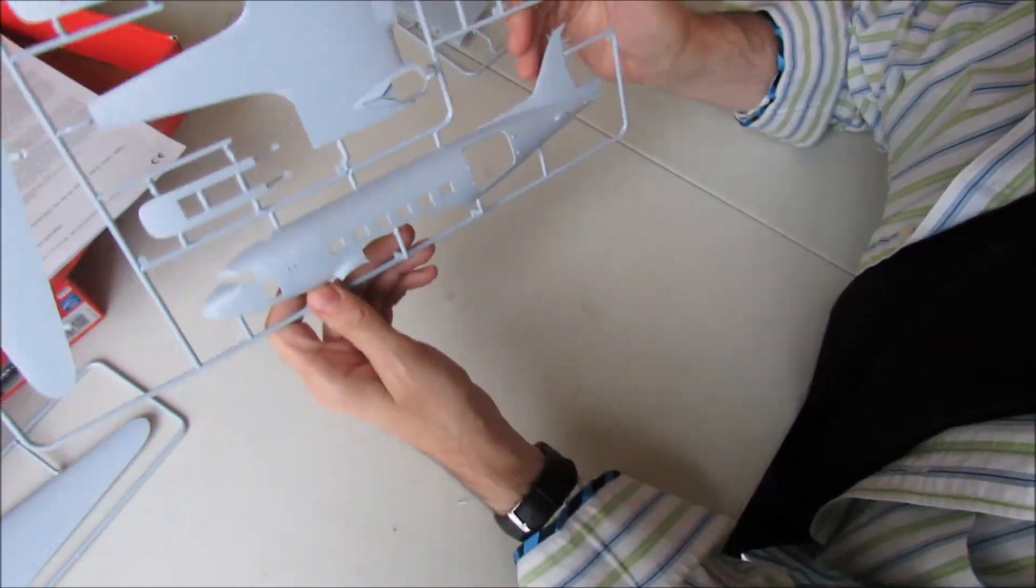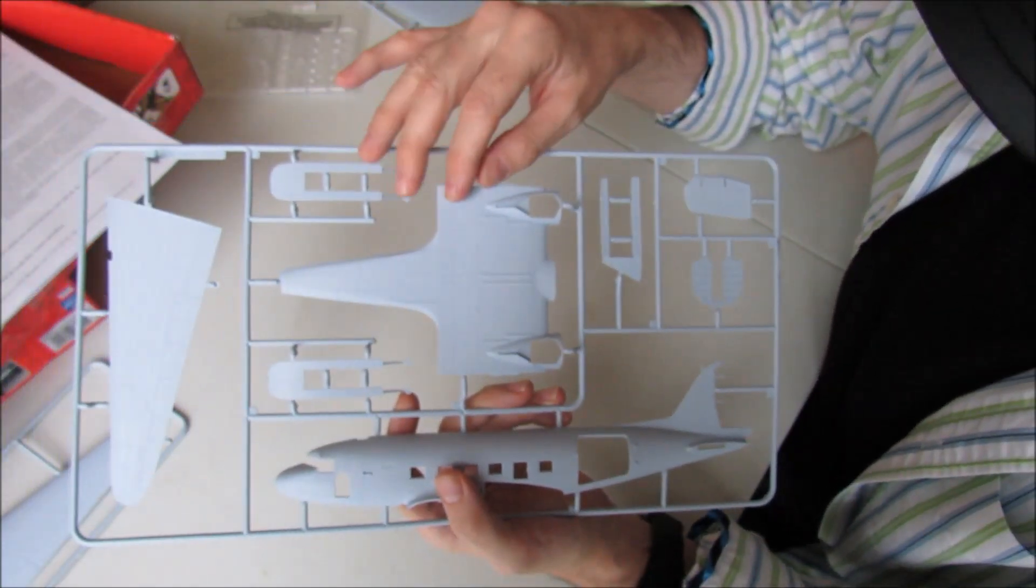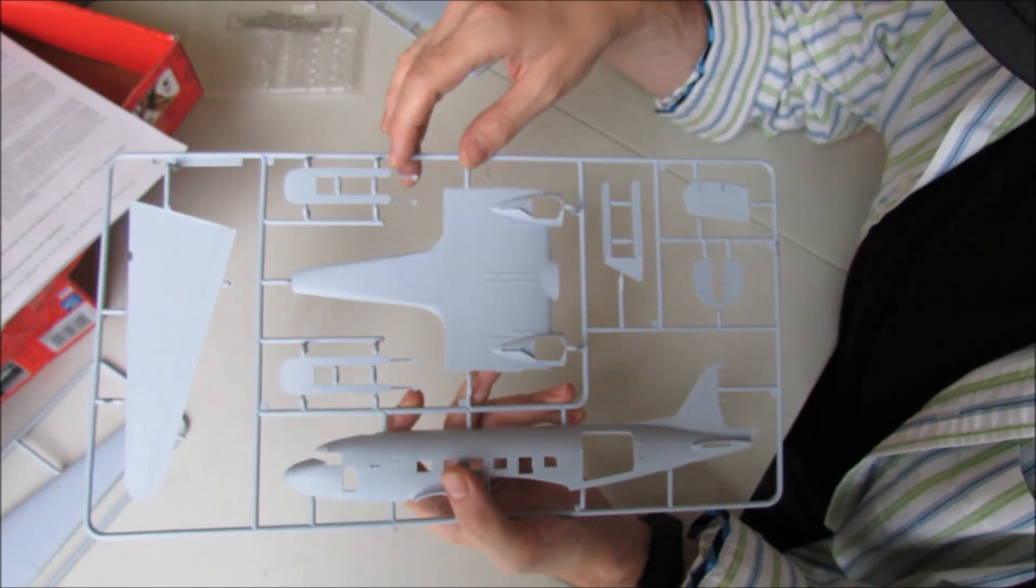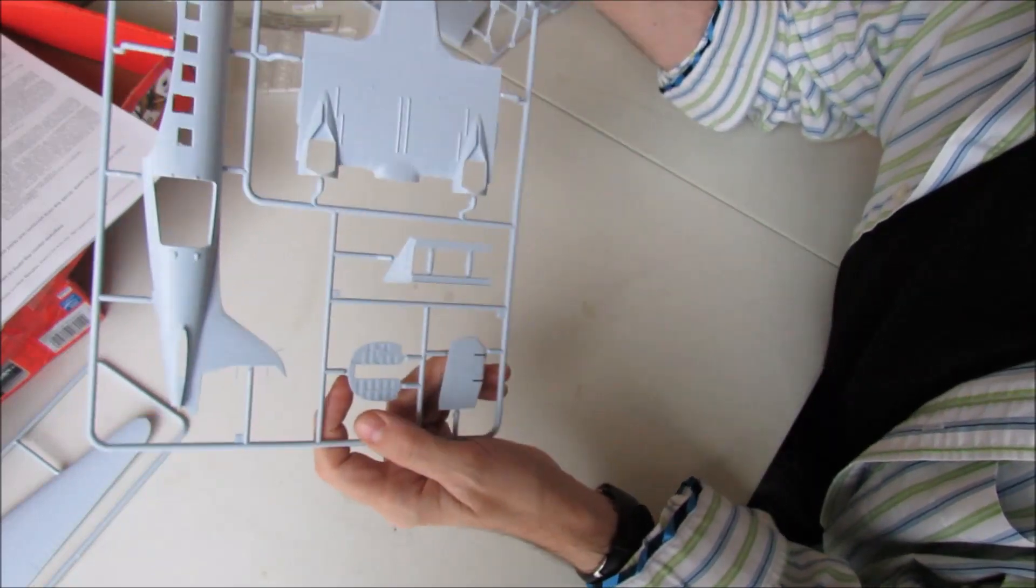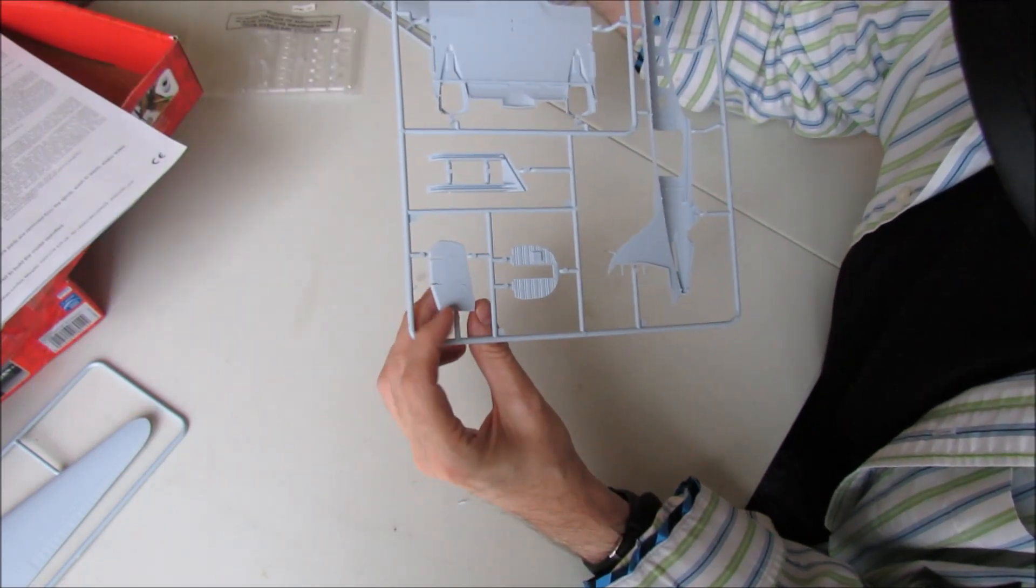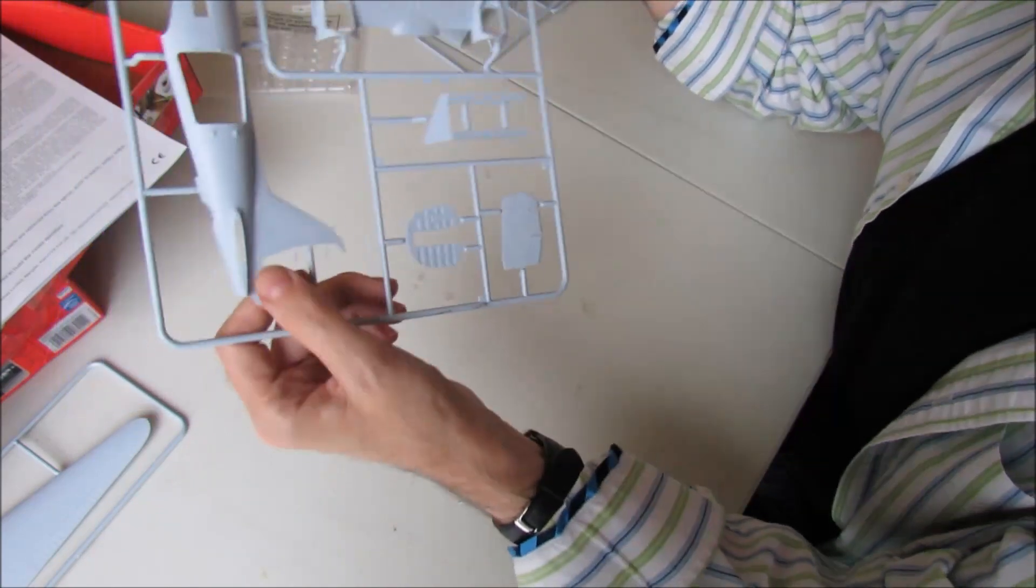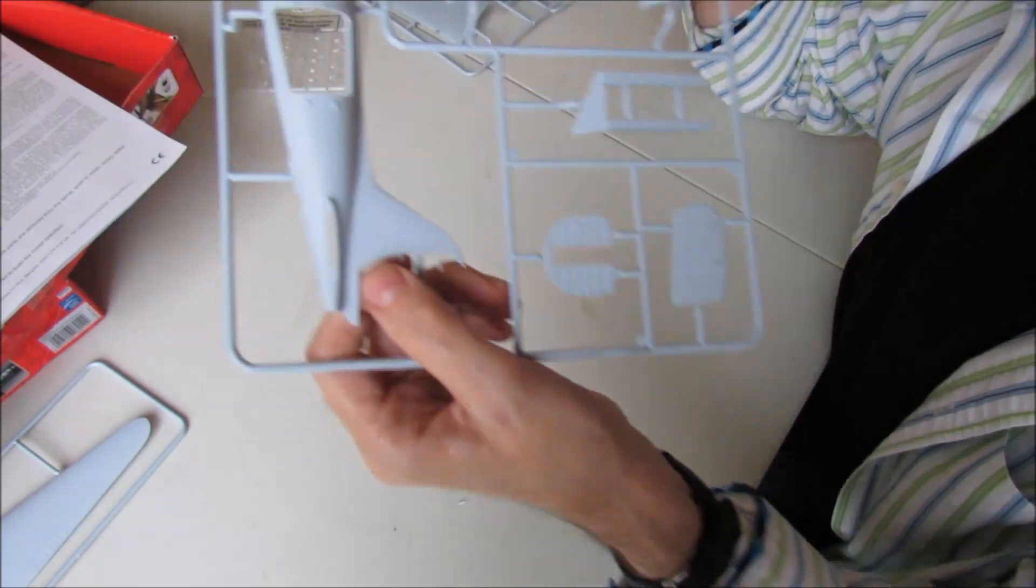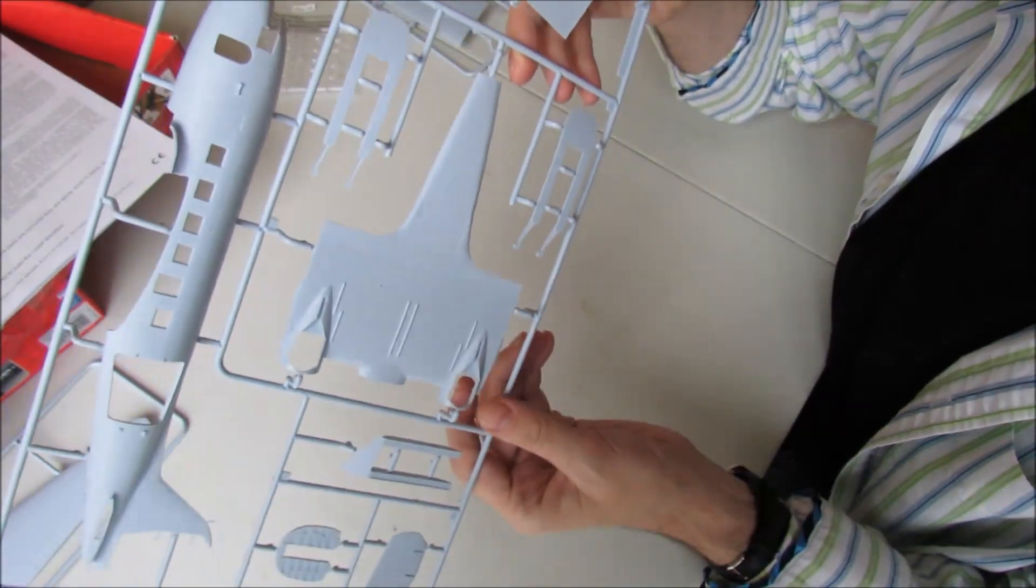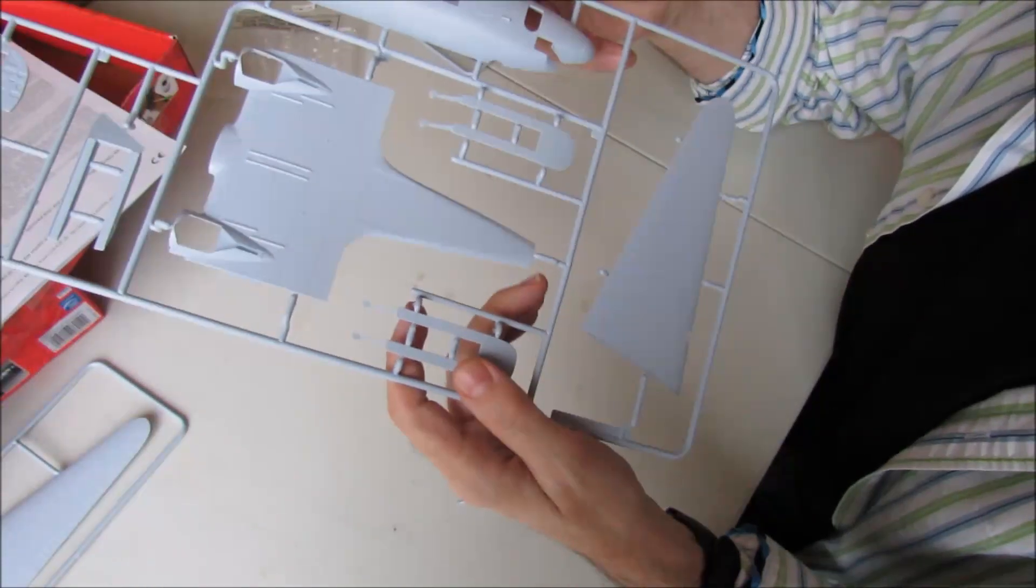Second sprue. Port side fuselage, lower wing for the starboard side, and then the under fuselage section which carries the underside of the engine cowlings, which has the openings for the wheel bays and the undercarriage. Some internal partition parts, and then this looks like maybe part of the rear rudder assembly. The rudder goes in there. And then these look like the skis which I won't be using for this version. But again, these parts look good.